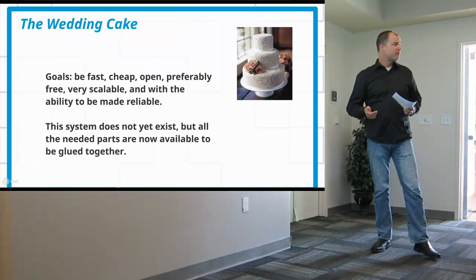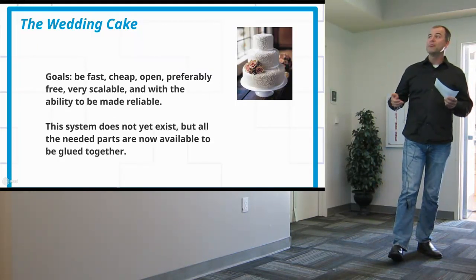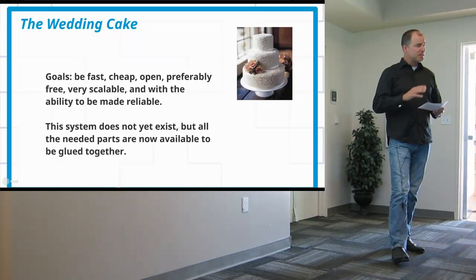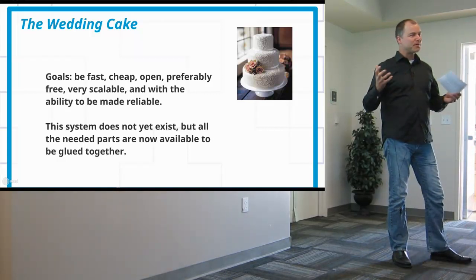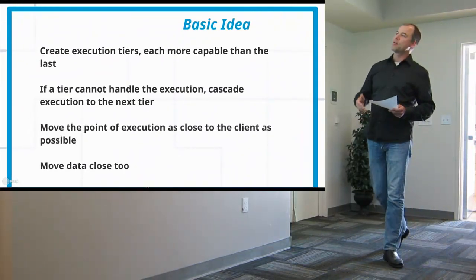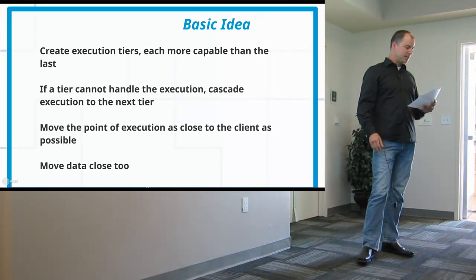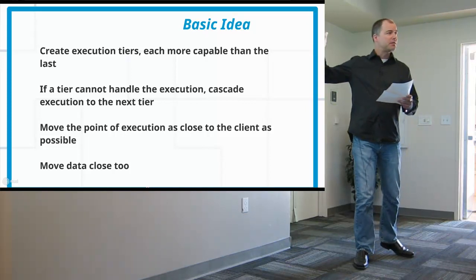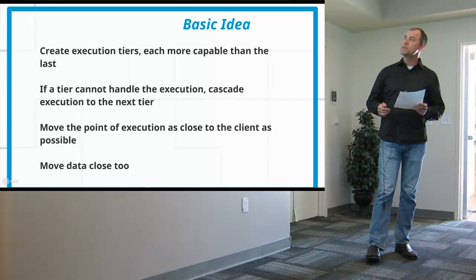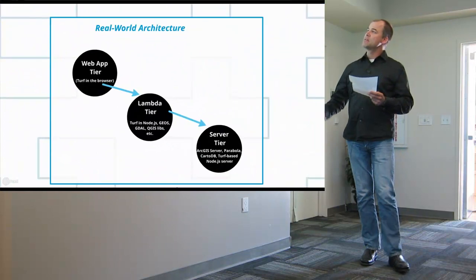I'm proposing an alternative geoprocessing architecture I'm calling Wedding Cake. It's intended to be fast, cheap, open — preferably free or near free — very scalable and reliable. It doesn't exist yet, but recently all the needed parts required to bring it into existence have become available. The basic idea of Wedding Cake is to create execution tiers for geoprocessing and cascade execution down the tiers as needed.